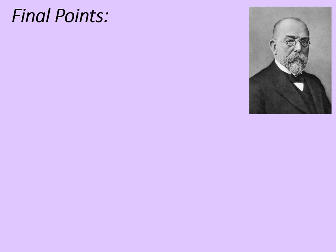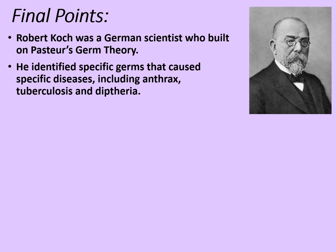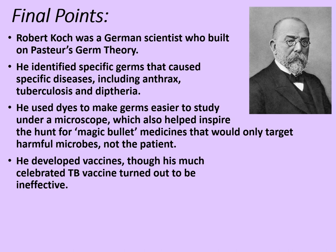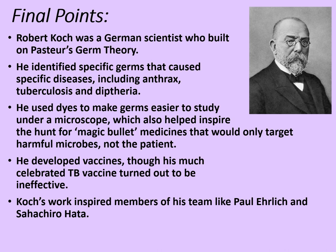Some final points then. Robert Koch was a German scientist who built on Pasteur's germ theory. He identified specific germs that cause specific diseases, including anthrax, tuberculosis, and diphtheria. He used dyes to make germs easier to study under a microscope, which also helped to inspire the hunt for magic bullet medicines that would only target harmful microbes and not the patient. He developed vaccines, although his much-celebrated TB vaccine turned out to be ineffective. However, Koch's work inspired members of his team like Paul Ehrlich and Sahachiro Hata to do their own investigations in the search for these so-called magic bullet medicines.